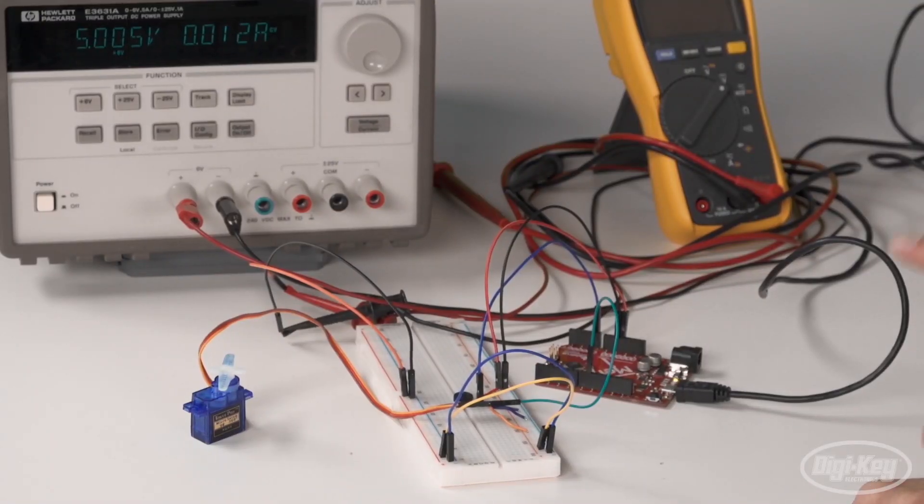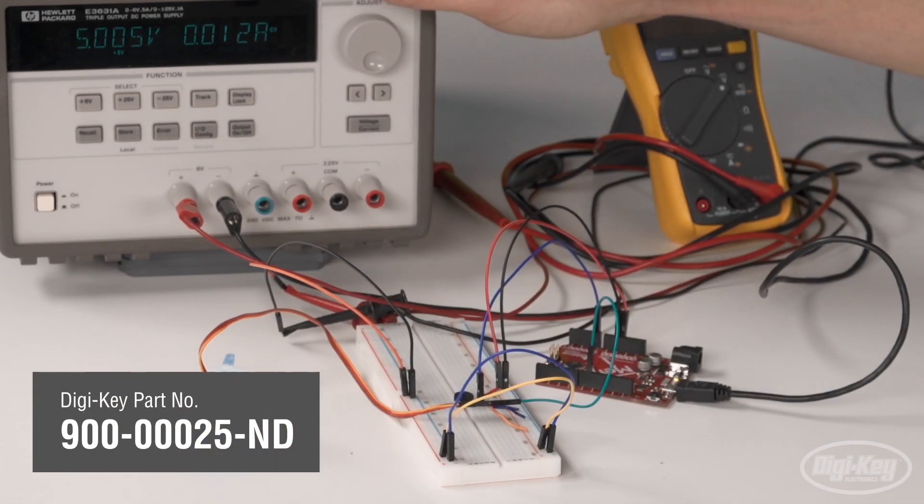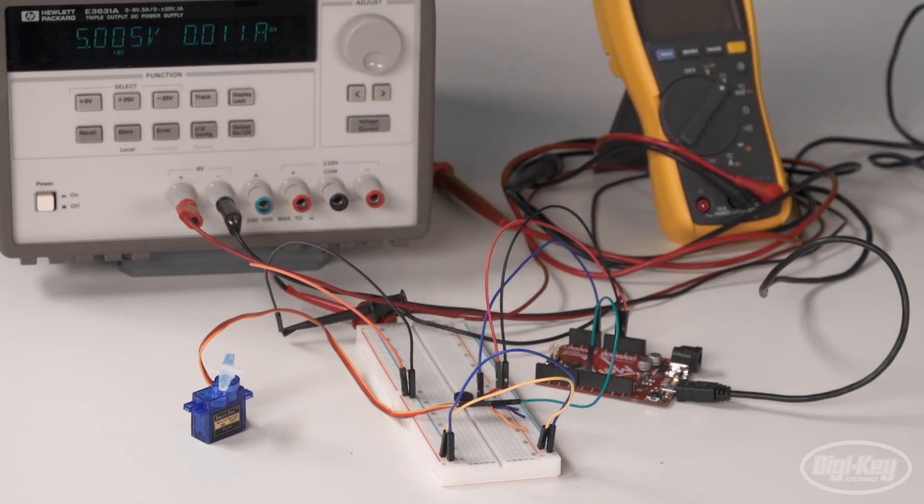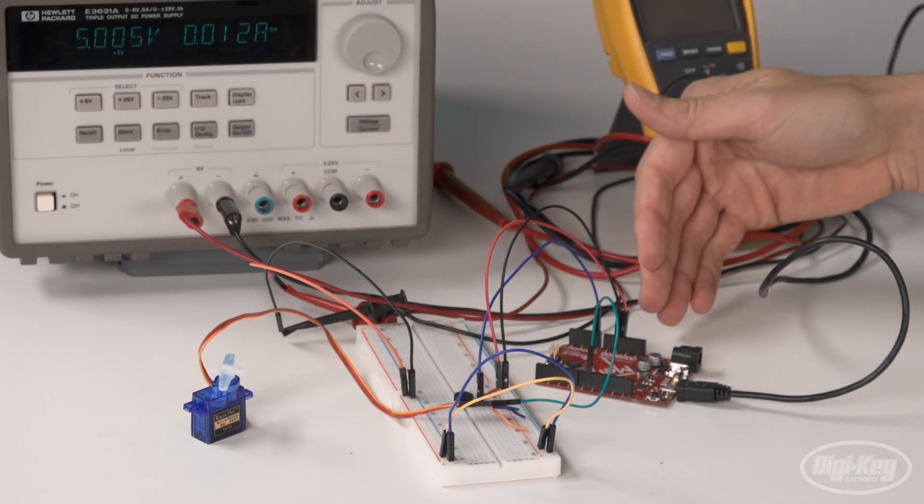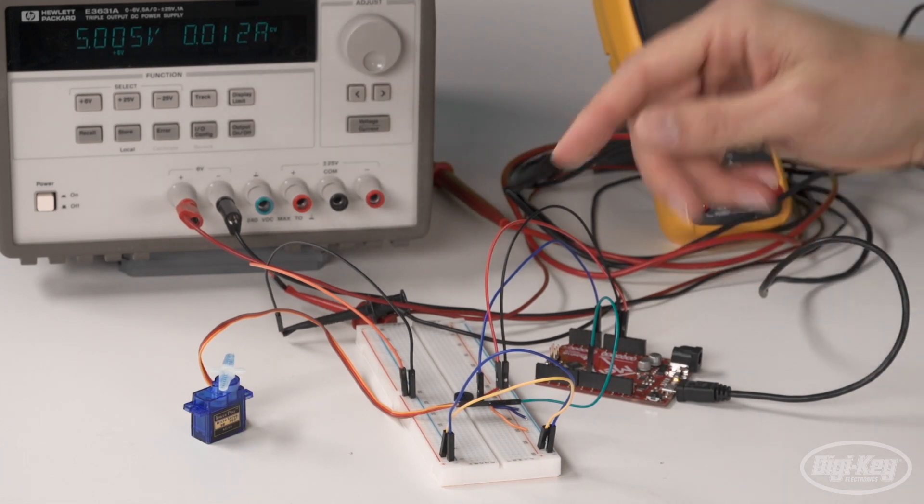So here we have an Arduino-based demo. We have the Arduino itself, the servo, the power supply for the motor, and also a potentiometer. The potentiometer is connected to the analog input of the Arduino and controls the speed and or position of the servo.